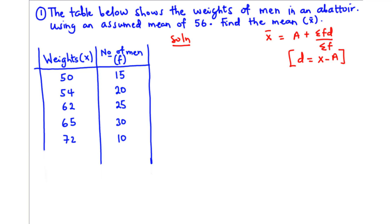In today's video we are going to learn how to calculate the mean for a distribution using the assumed mean method. Normally the assumed mean method is used to find the mean of grouped data, however in this video we are going to consider both grouped data and ungrouped data.